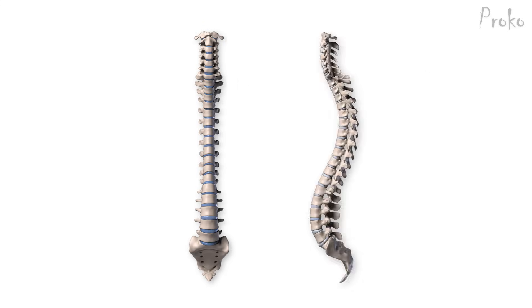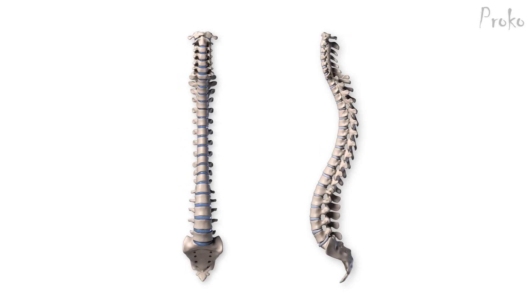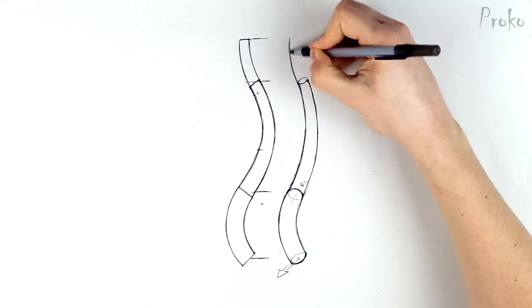As we rotate around the spine, the curves go from straight line in front view, to very curvy in side view. Again, same thing for the cervical section.